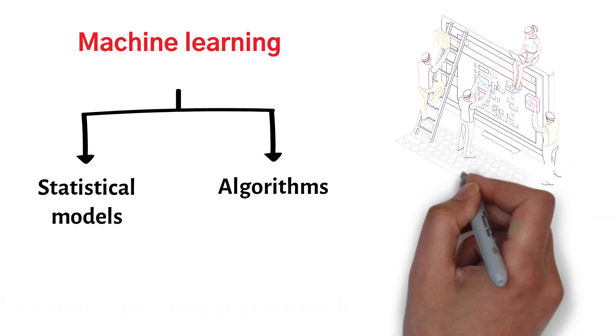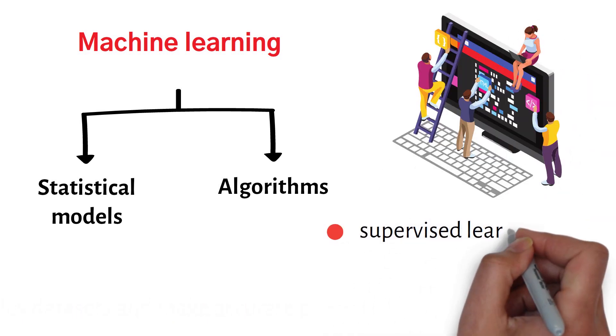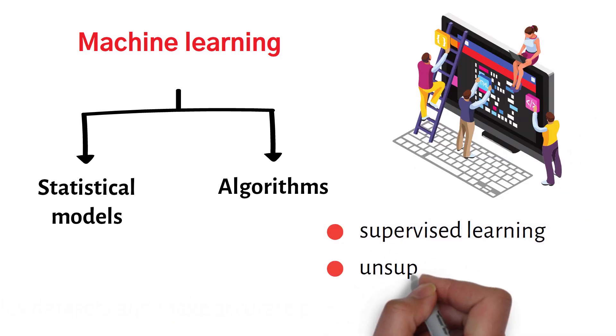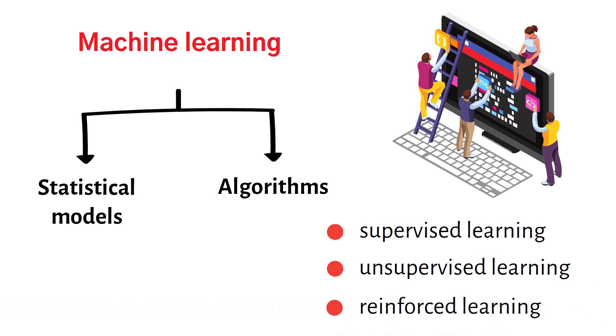Machines can learn in different ways — through supervised learning, unsupervised learning, reinforcement learning, and more.